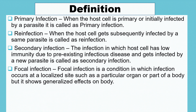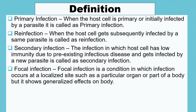Fourth is focal infection. Focal infection is a condition in which infection occurs at a localized site such as a particular organ or part of the body, but it shows a generalized effect on the body. For example, tonsils may be affected but the effect is shown by the entire body. Such infections are called focal infections.